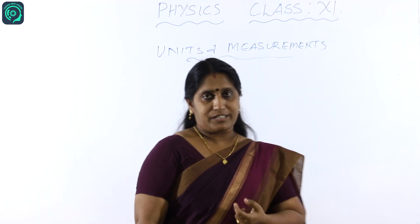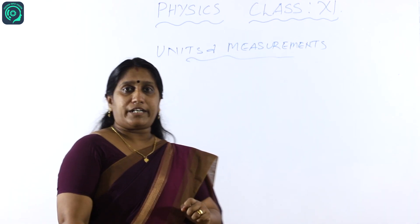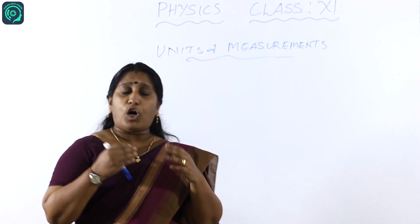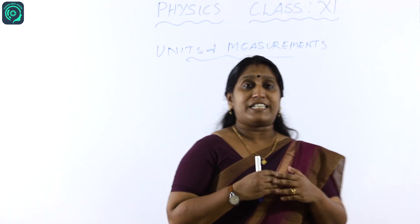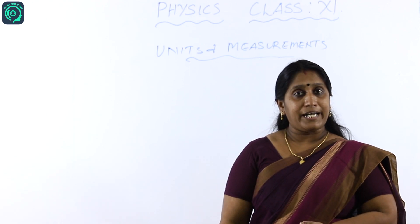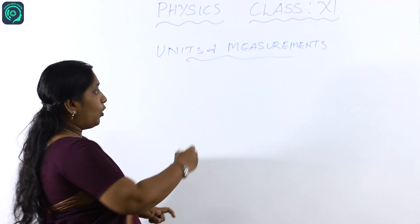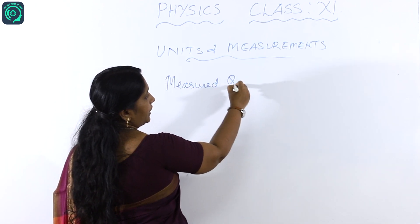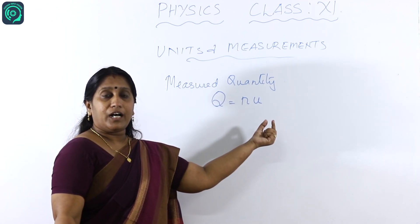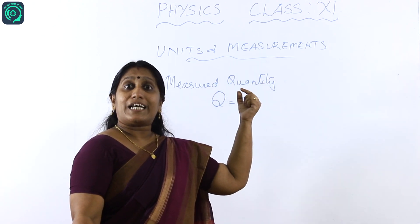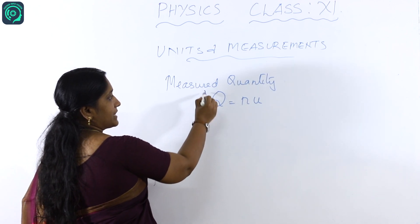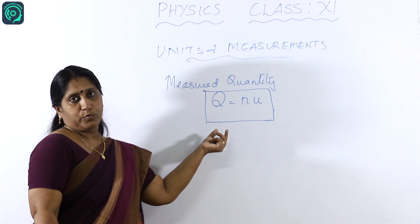What do you mean by a unit? The standard measurement for comparing a physical quantity is known as a unit. Now, to express a measured quantity there are two essential requirements: the number, and the system of unit in which you are expressing the quantity — that is, the number of times that quantity is appearing. A measured quantity can be represented as Q = nu, where u is the unit and n is the number of times it appears.